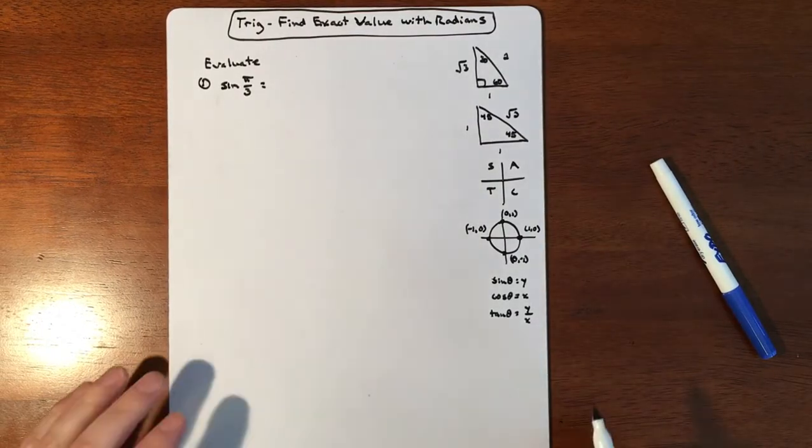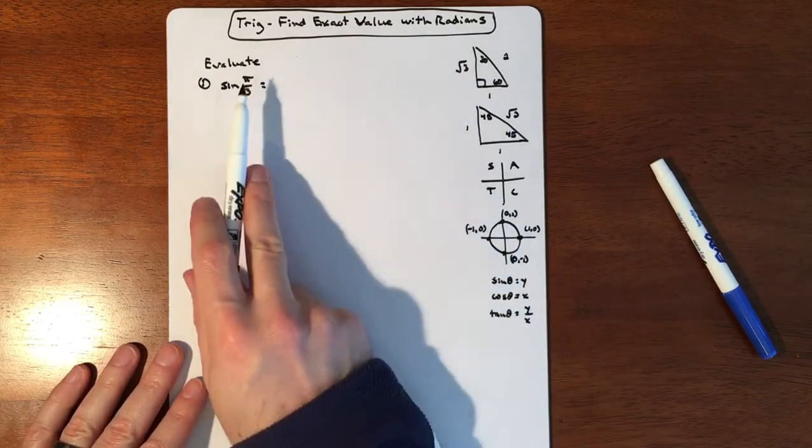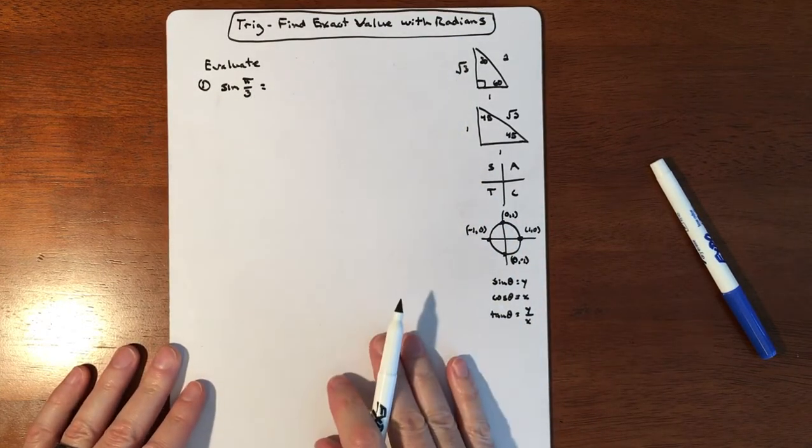In this lesson we're going to find the exact value of some of the trig functions, but this time rather than degrees our angle measurements are going to be in radians.